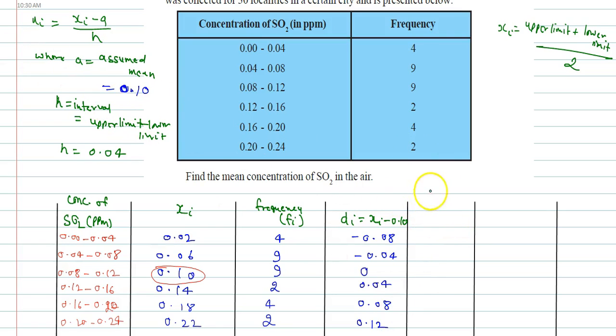So ui, I can write ui is nothing but di by h, the deviation by h. The value of h is 0.04, so here it will be minus 2, minus 1, 0, 1, 2, and 3.